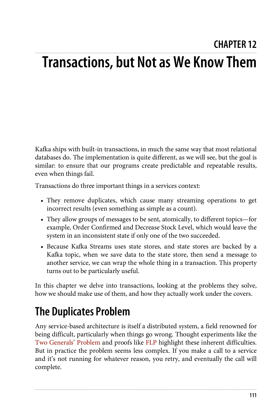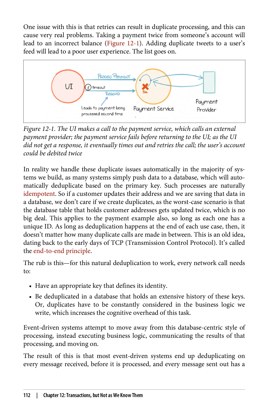In this chapter we delve into transactions, looking at the problems they solve, how we should make use of them, and how they actually work under the covers. The duplicates problem: any service-based architecture is itself a distributed system, a field renowned for being difficult, particularly when things go wrong. Thought experiments like the two generals problem and proofs like FLP highlight these inherent difficulties. But in practice the problem seems less complex. If you make a call to a service and it's not running for whatever reason, you retry, and eventually the call will complete. One issue with this is that retries can result in duplicate processing, and this can cause very real problems.